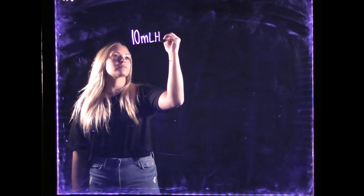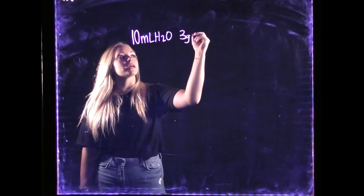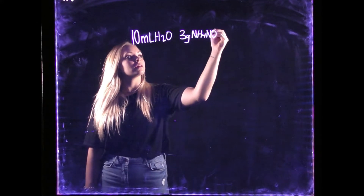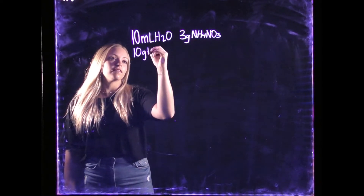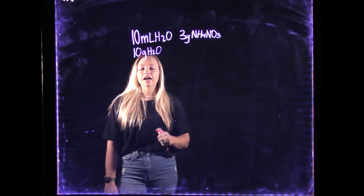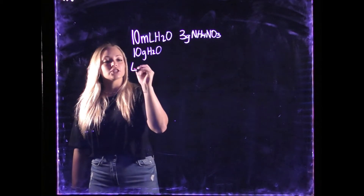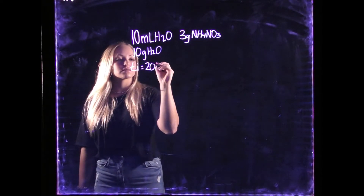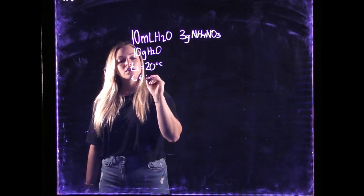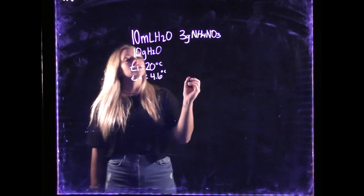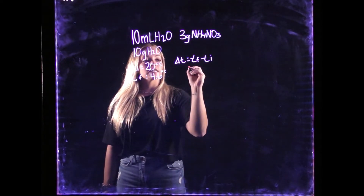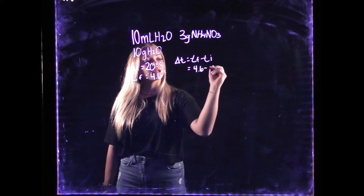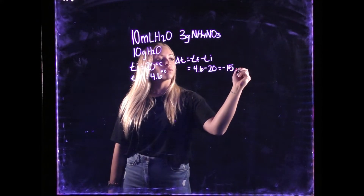For our next example, we will be using 10 milliliters of water and 3 grams of ammonium nitrate. The 10 milliliters can be converted to 10 grams of H₂O. Our first step is to calculate the change in T. T initial was 20 degrees Celsius and T final was 4.6 degrees Celsius. T final minus T initial gives us 4.6 minus 20, which is negative 15.4 degrees Celsius.